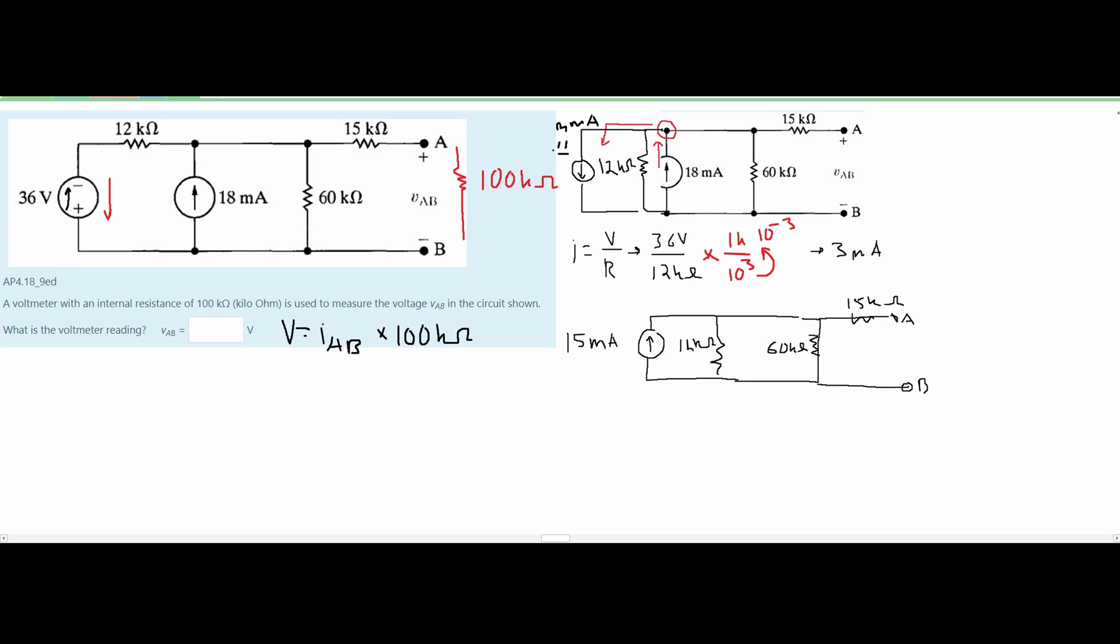Then we have our terminals A and B and inside of our terminals A and B we know we have a resistance of 100 kiloohms.